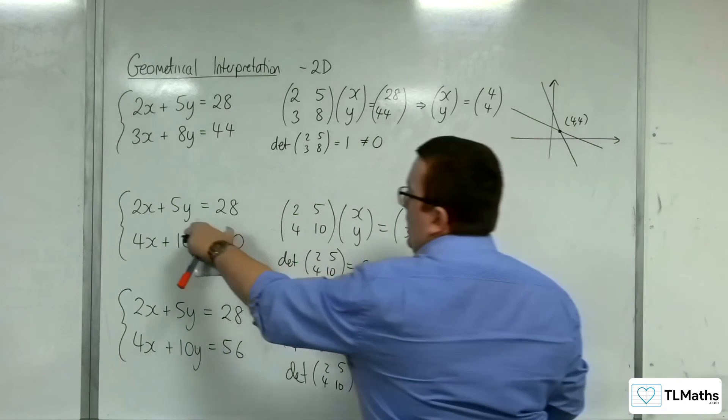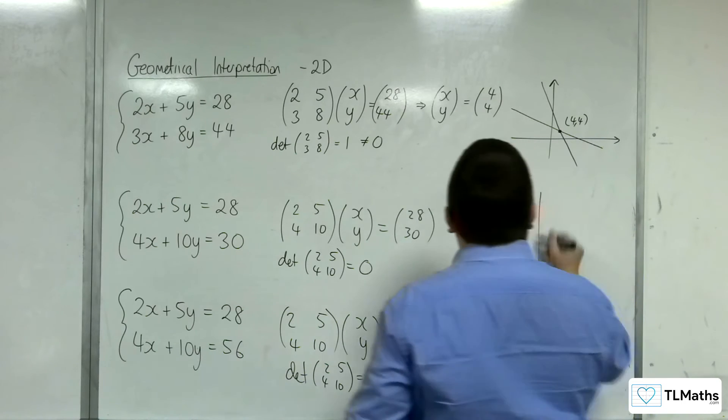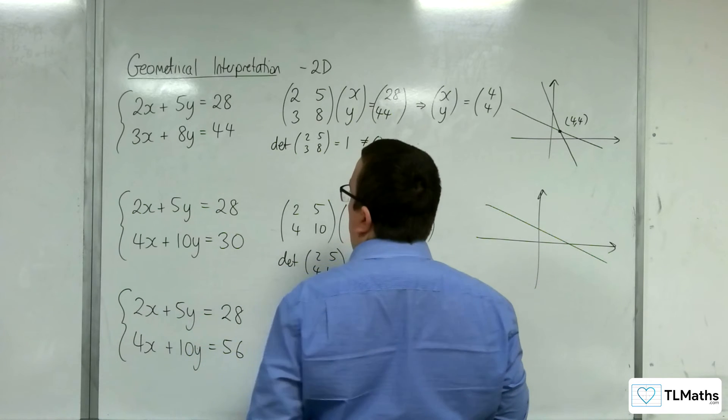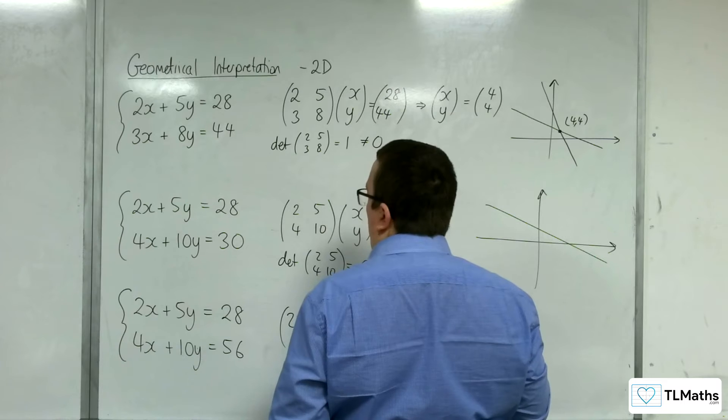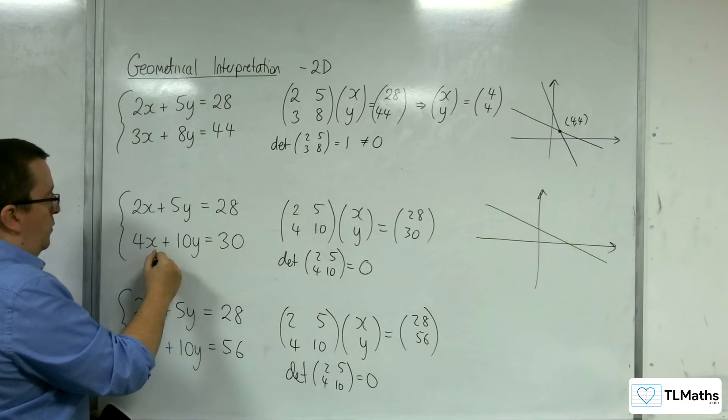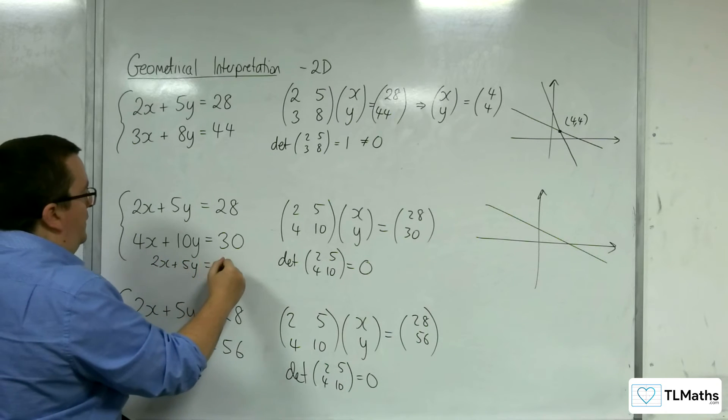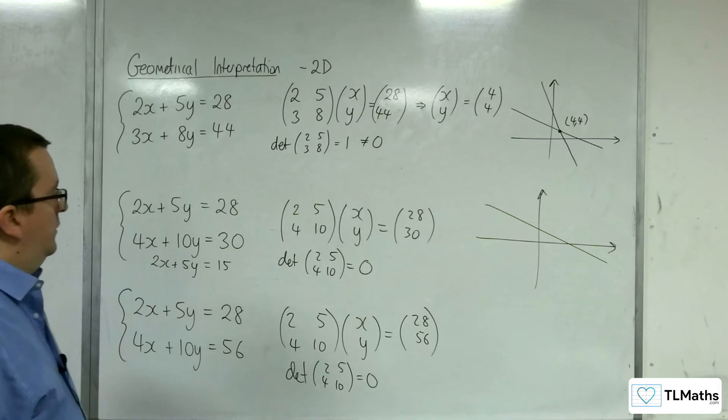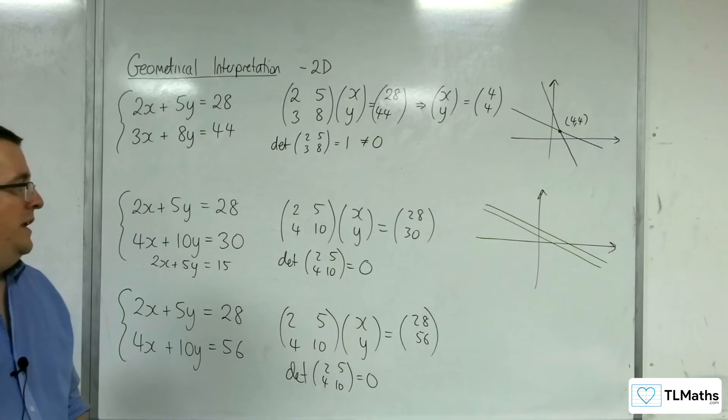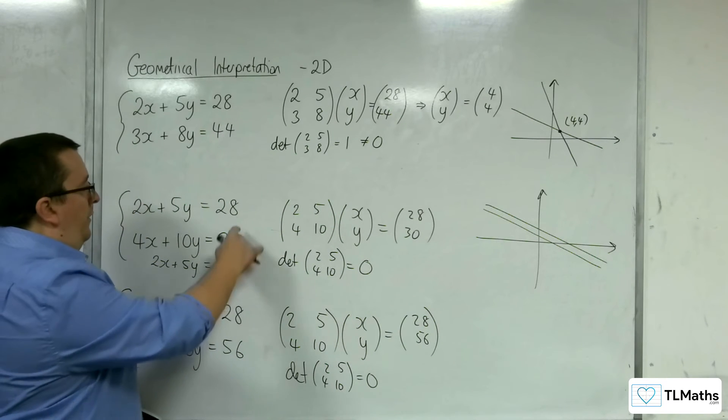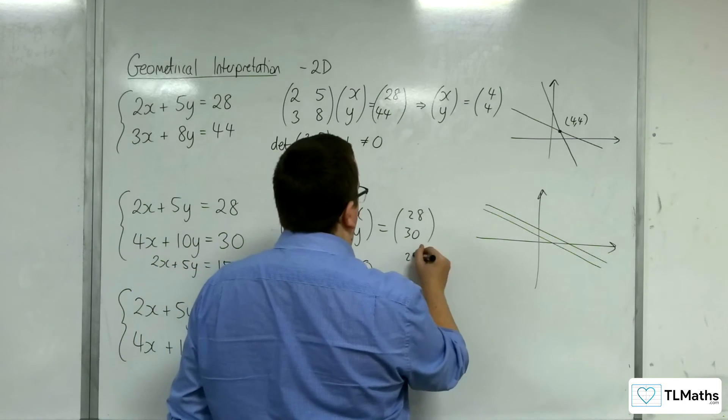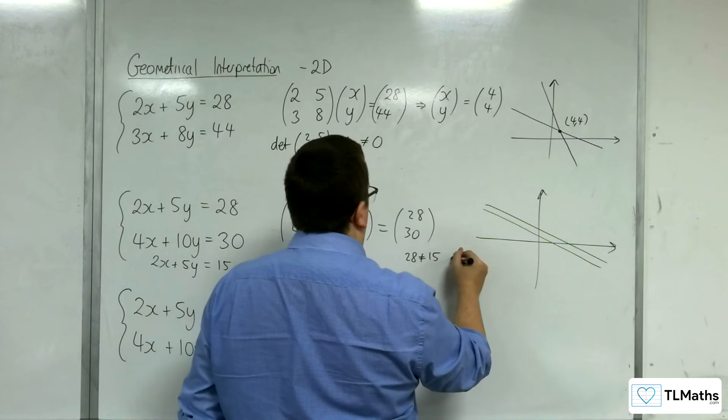So for this one here, okay, what you've actually got is a situation where you've got the first line, 2x plus 5y equals 28, and the 4x plus 10y is equal to 30. Okay. If you were to divide through that by 2, you get 2x plus 5y is equal to 15. So actually, it would be a line looking something like that. And so these two lines are parallel because these two values are not the same. The 28 is not equal to 15.